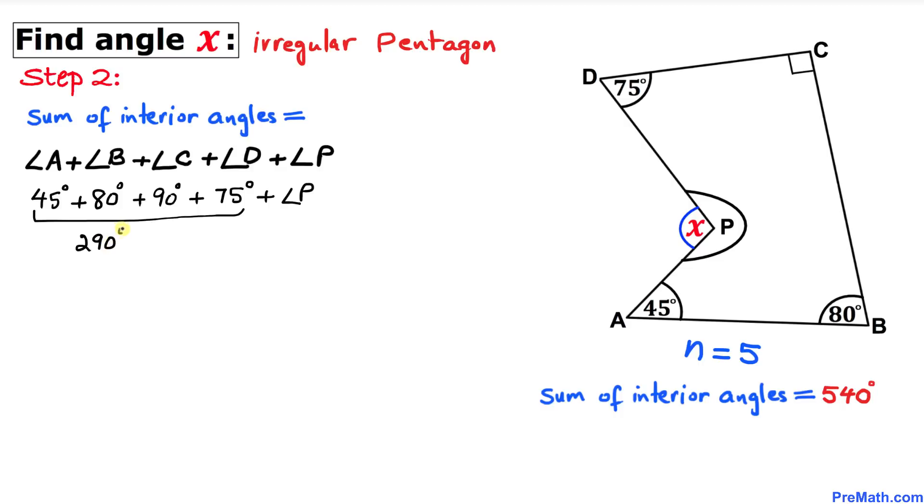So I'm going to write equal to 540 degrees. Let's solve for angle P now. Subtract 290 degrees from both sides - they cancel each other out. Our angle P turns out to be 250 degrees.